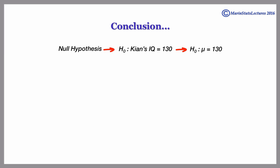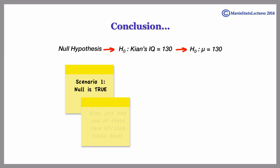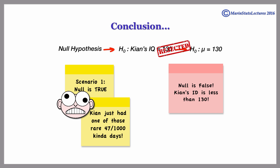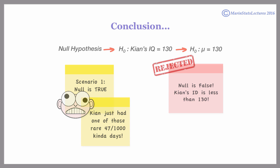From here, we know one of two things must have happened: either the null is true and he just ended up with one of those rare 47 out of 10,000 times kind of days, or the null is false and his IQ really is something less than 130.